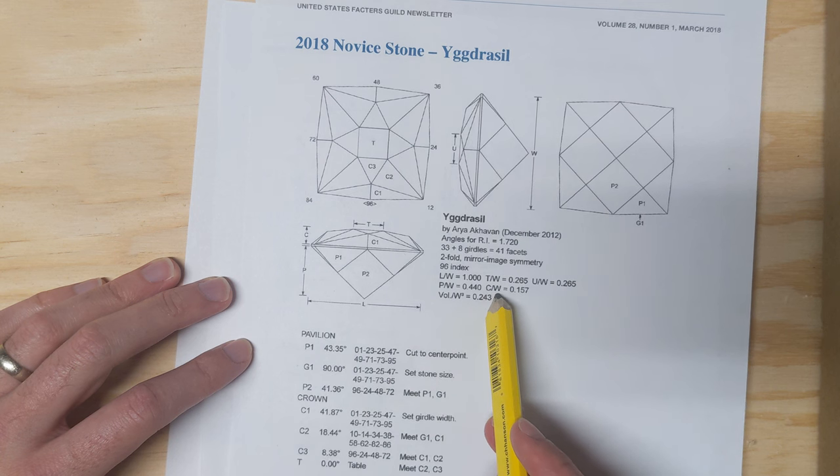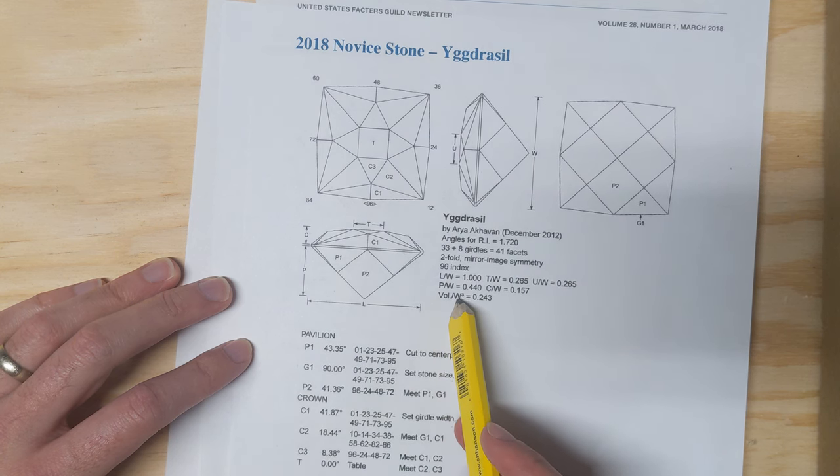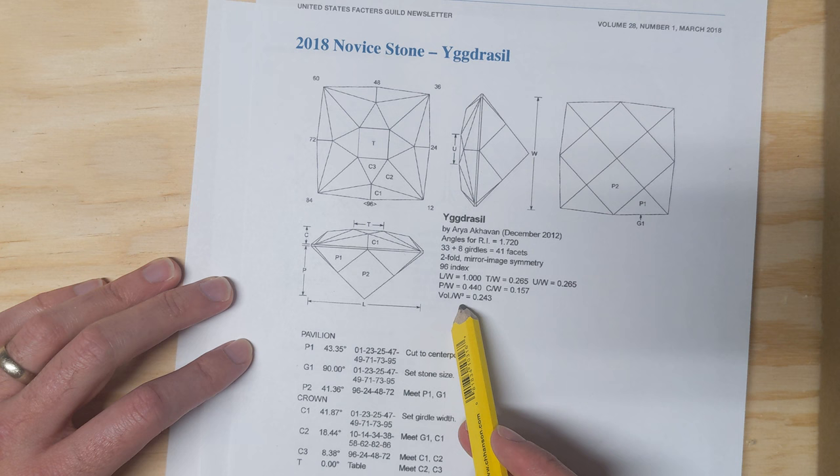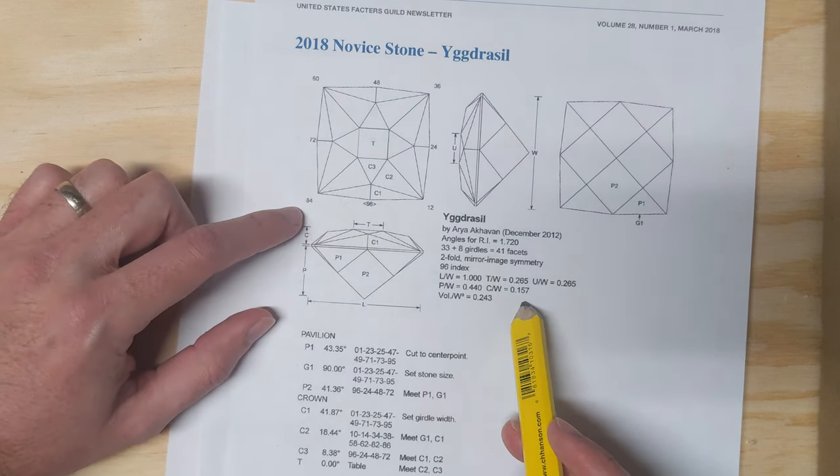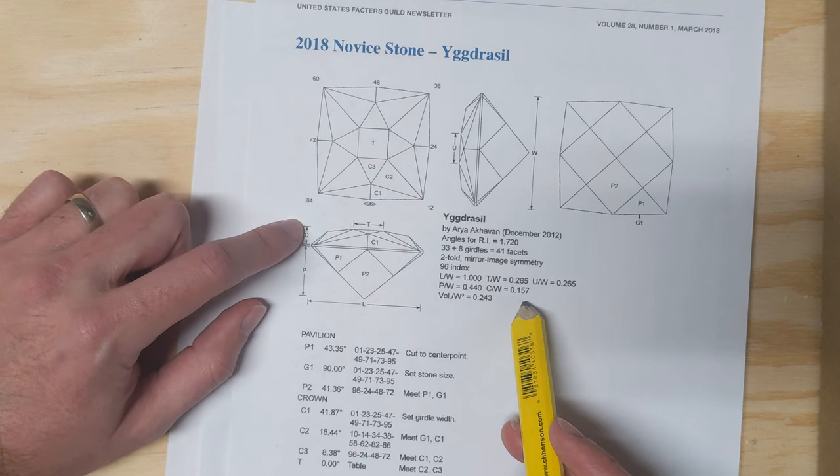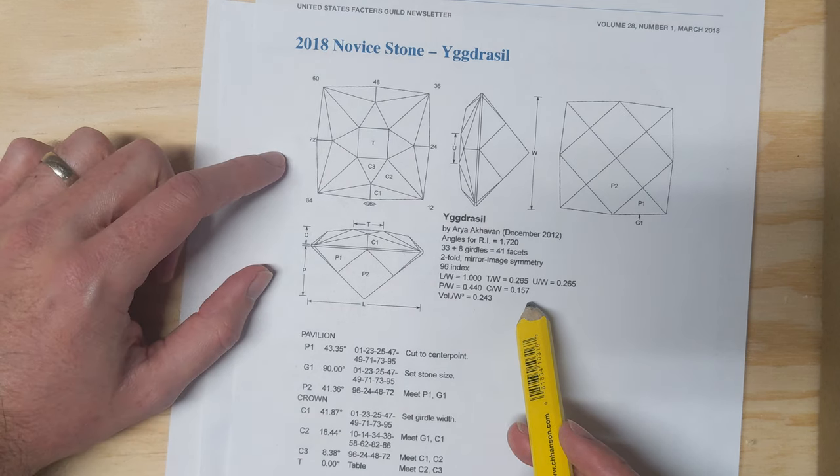Volume to cube width is 0.243. This is if you want to get really technical, if you're cutting it close, or if you're really trying to make the most out of your stone rough.